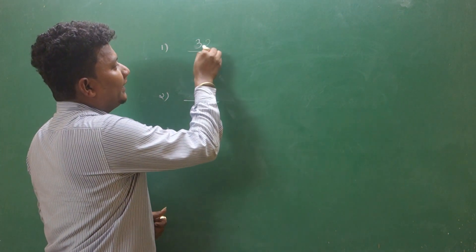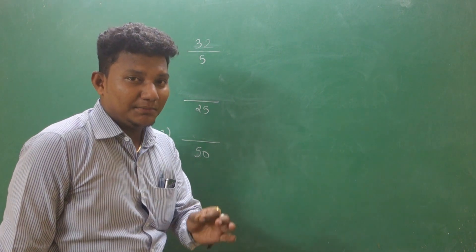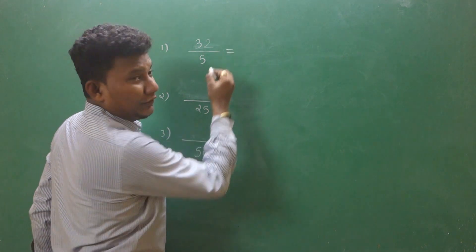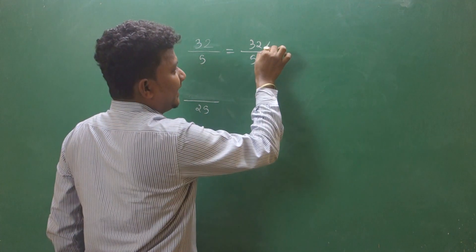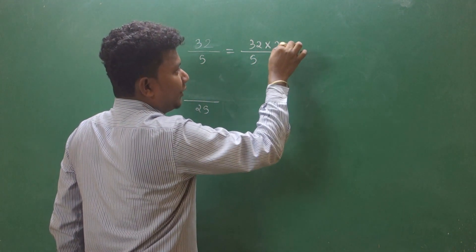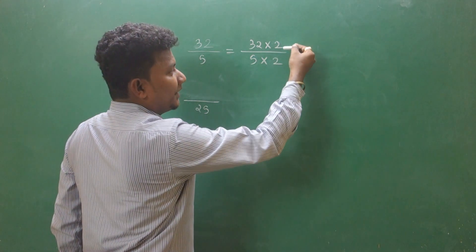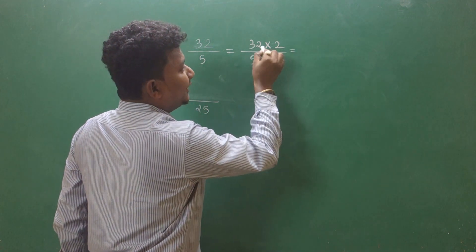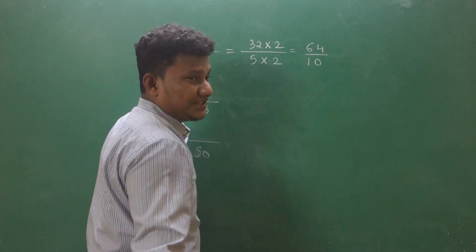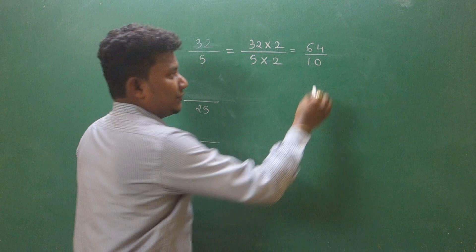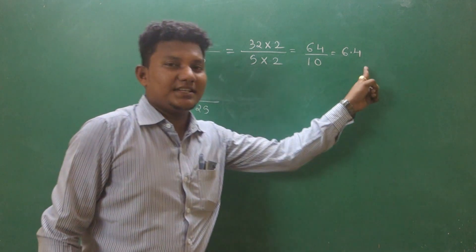Let's see the example as 32 divided by 5. Whenever you have to divide any number with 5, simply multiply 2 to the numerator and 2 to the denominator. So you will get 32 times 2 is 64, and 5 times 2 is 10. As you know, whenever you divide any number by 10, the result will be 6.4. So 32 divided by 5 gives the answer 6.4.